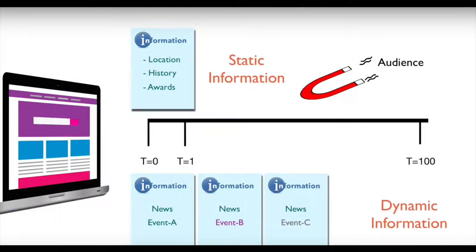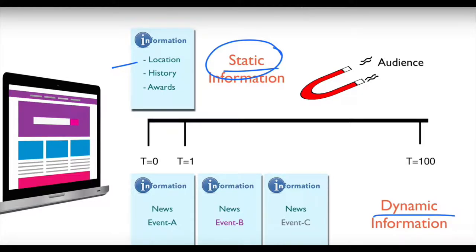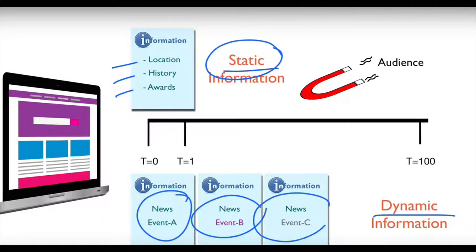Then we looked at static versus dynamic information. Information that does not change frequently is called static information — in the context of a school website, this could be the location, history, or awards the school has won. Dynamic information is information that changes frequently — for example, events happening daily, weekly, or monthly. That frequently changing information is called dynamic information.